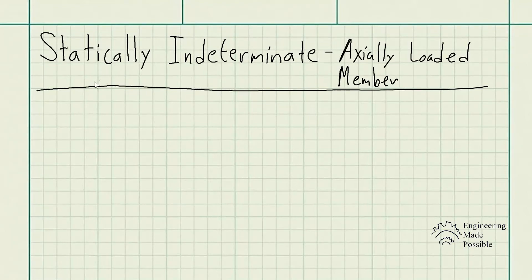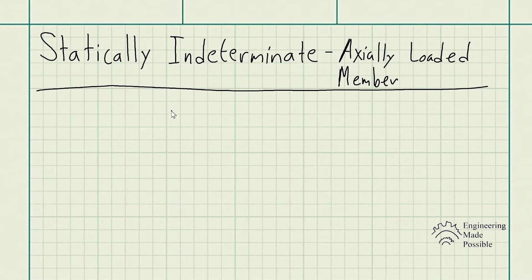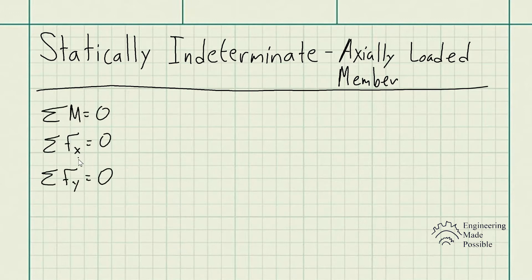Today we'll be going over what's called statically indeterminate for an axially loaded member. Statically indeterminate means we need more information than the three equilibrium equations from statics — the sum of moments and the sum of forces along the x and y directions equal to zero. Some problems require an additional relationship to solve for reactionary forces.